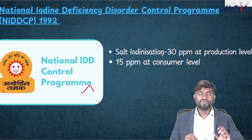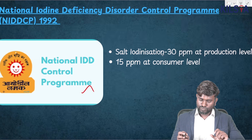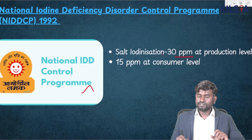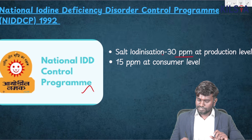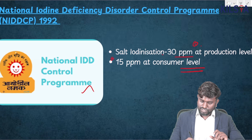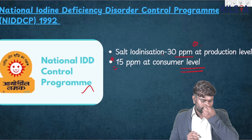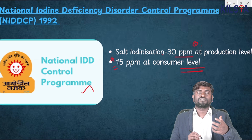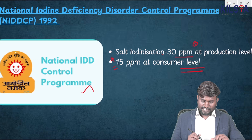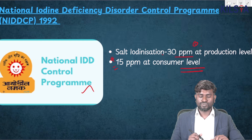This is the image of the National Iodine Deficiency Disorder Control Program. Here, salt iodization: 30 ppm at production level and 15 ppm at the consumer level are two important points to remember for the exam. You can also see the sun in the image, which represents sunlight for the production of salt.